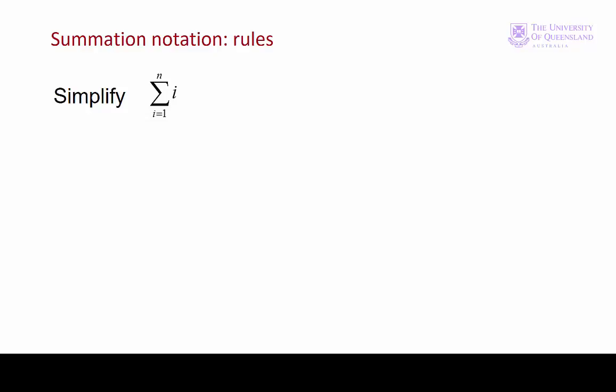The problem we have here is to sum integers from 1 up to some arbitrary number n. We want to find a general solution. We came across this example in lecture 1 when we proved the result by induction. Let's see how we can find the solution from first principles.